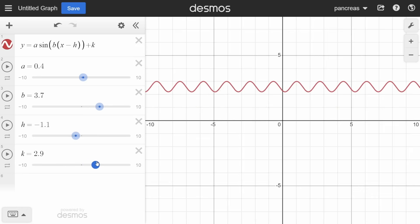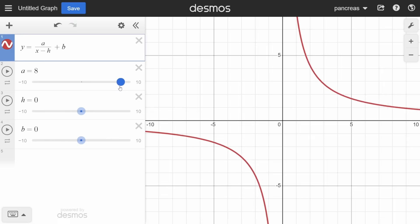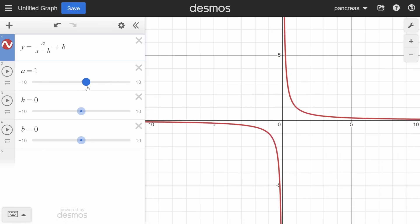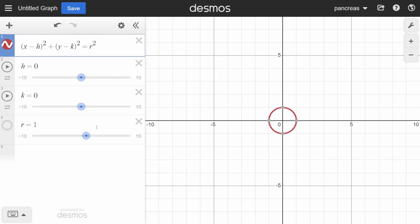Next we have the rational function. As 'a' gets closer to zero, the more corner-like the curve looks. As it gets further, the more rounded it is. Similarly to the quadratic function, 'h' shifts the curve left and right, and 'b' shifts the curve up and down.